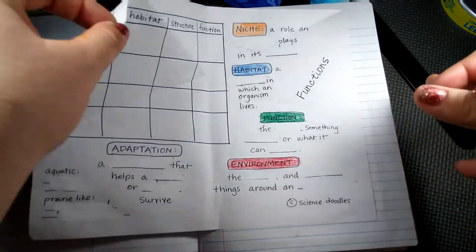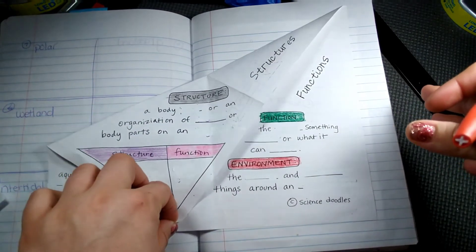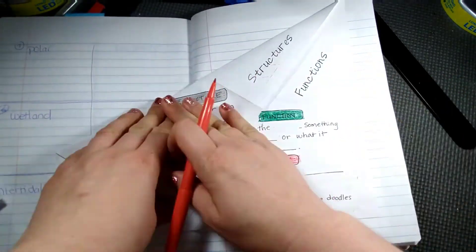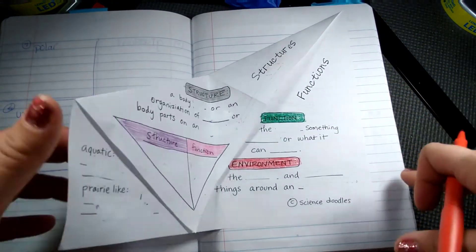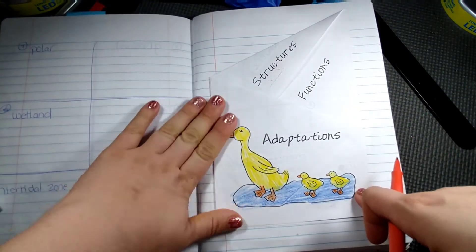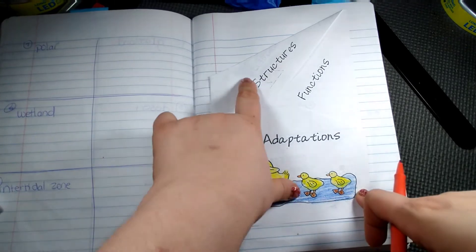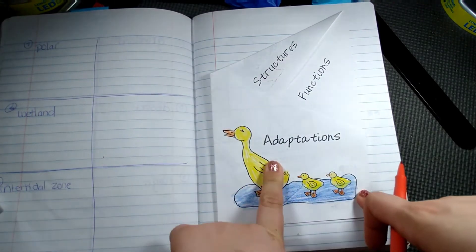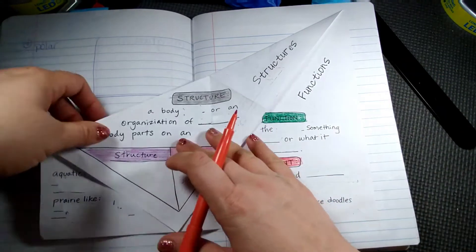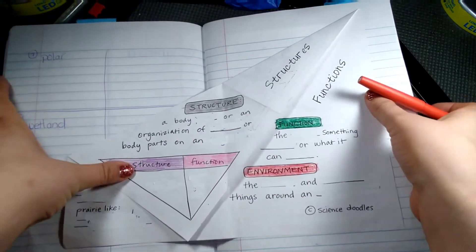You're going to take the top left corner and fold it until it just touches the bottom. And then you're going to take this corner and we're going to fold it like that. So we're going to be talking about the structures and functions, kinds of adaptations. So here are our notes to begin with.